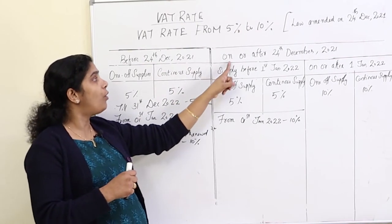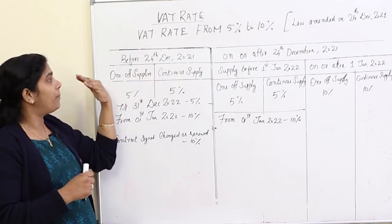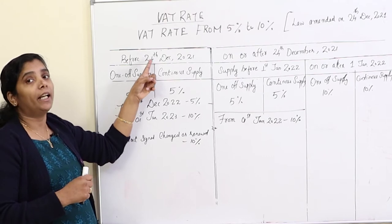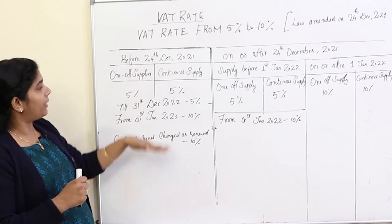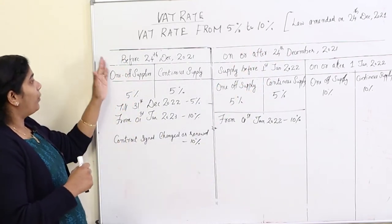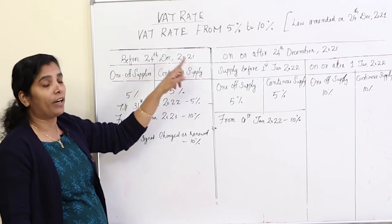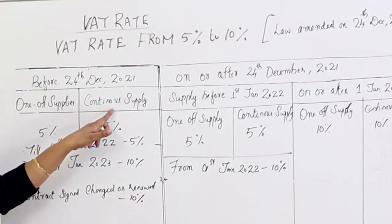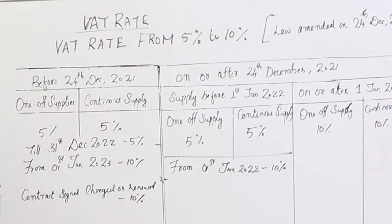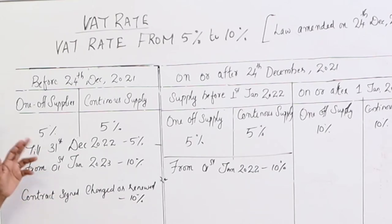Contract signed before 24 December 2021, and contract signed on or after 24 December 2021. We will look at the first item: contract signed before 24 December 2021.